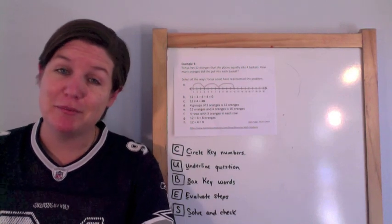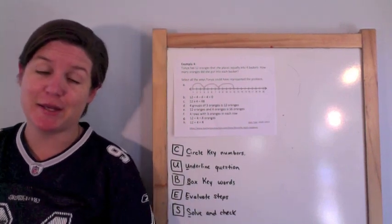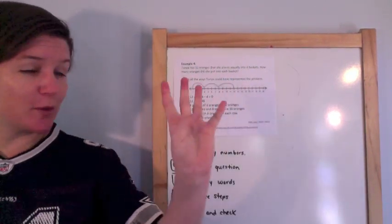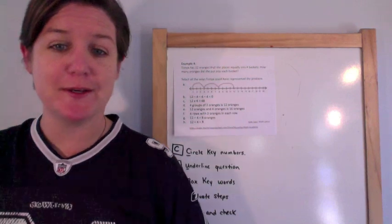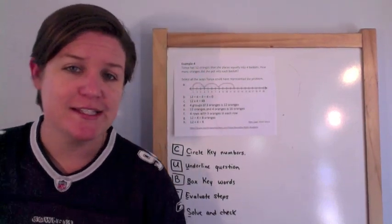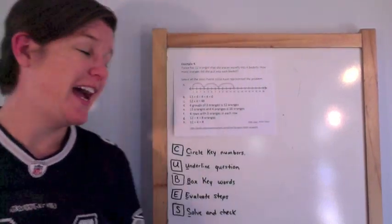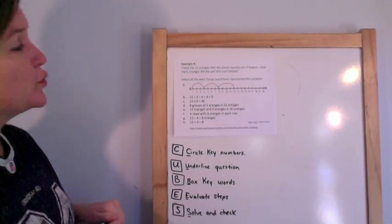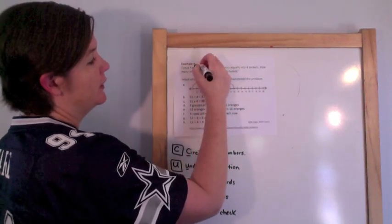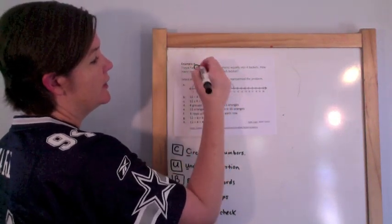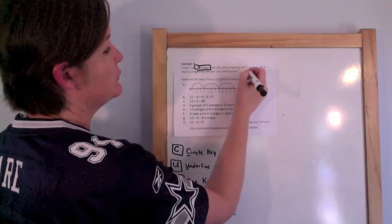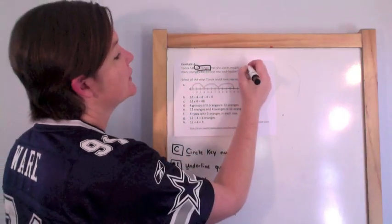Last type of problem for today — Example 4. We only have four examples because there are only four types of problems you'll encounter for this benchmark. It says: Tanya has twelve oranges that she places equally into four baskets.